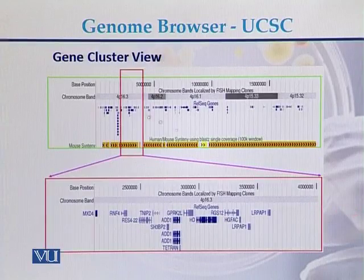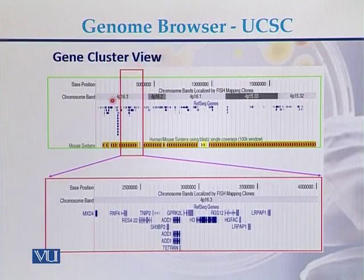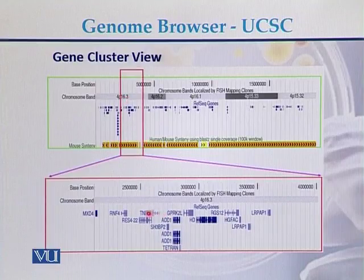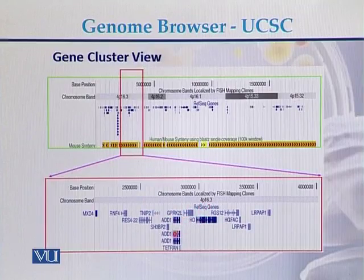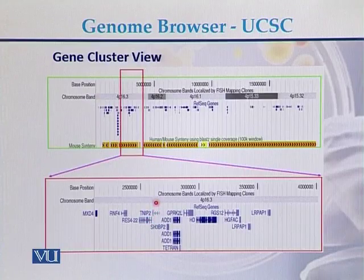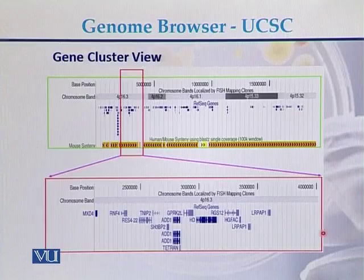There is another view that can be seen at the UCSC genome browser called the gene cluster view. Within a specific band, genes can be seen here. This band 4P16.3 has been magnified, and these are the genes which are present on this location or band of the chromosome. So these are all the genes present at 4P16.3.